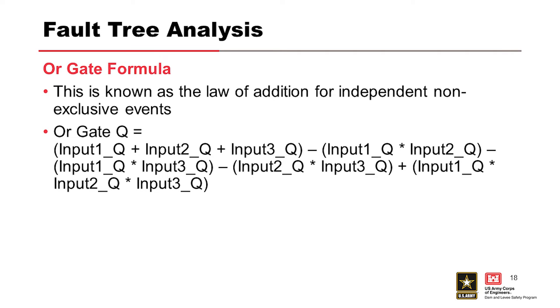And so the OR gate formula is an example shown below. The OR gate is known as the law of addition for independent, non-exclusive events. And again, for an example, OR gate formula is shown here with, gate fails to operate. That could be due to gate operation controls failed, gate mechanical drive fails, or electrical power source fails. And that formula at the top there is the mathematics that would go along with that OR gate.